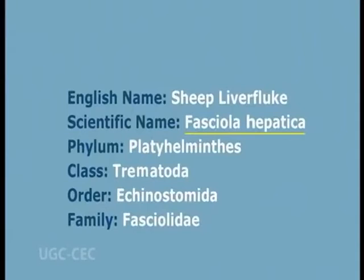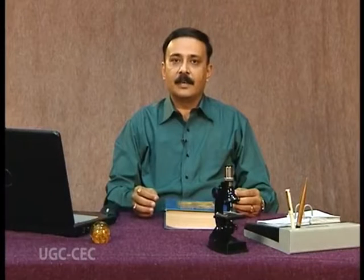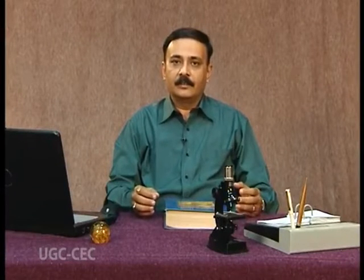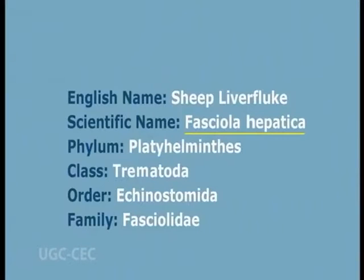The scientific name of liver fluke is Fasciola hepatica and they belong to phylum Platyhelminthes. Regarding classification: phylum Platyhelminthes, class Trematoda, order Echinostomida, family Fasciolidae, and genus and species are Fasciola and hepatica. The genus and species combined are known as the scientific name of the animal, so Fasciola hepatica.